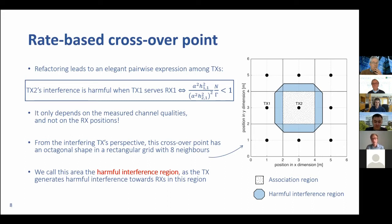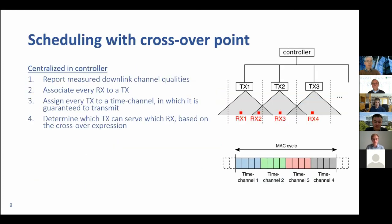Having this crossover point, we can build a scheduler. We use a two-level approach: a central part which runs in the central controller, and also a distributed part which runs in the transmitters or access points. The central controller collects the measured downlink qualities, decides which transmitter is responsible for each receiver, and assigns time channels to the transmitters. Based on the crossover point from the previous slide, the controller can determine which transmitter can be active in which time channel and to which receiver it may communicate.